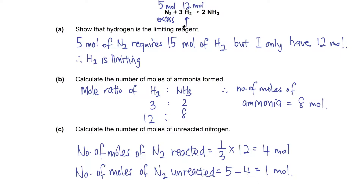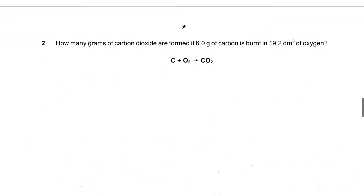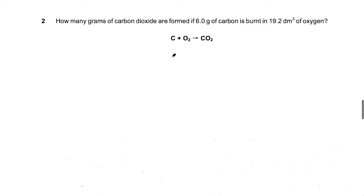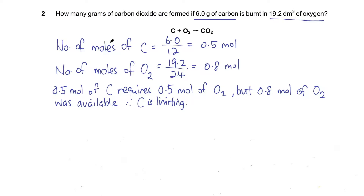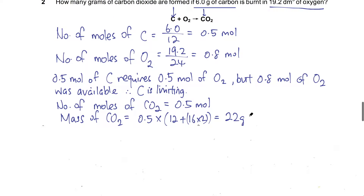Let's go on to the next question — you can pause the video and try it first. Whenever you are given two quantities in a question, you must find the number of moles for each of them. In this example, carbon is the limiting reactant, so we use the number of moles of carbon to calculate the number of moles of carbon dioxide. You should get 22 grams.